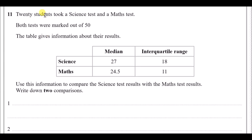Number eleven: 20 students took a science test and a maths test, both marked out of 50. The table gives the median and interquartile range. The median is the middle value when marks are ordered; science had a median of 27 and maths had a median of 24.5. The IQR is the third quartile minus the first quartile.